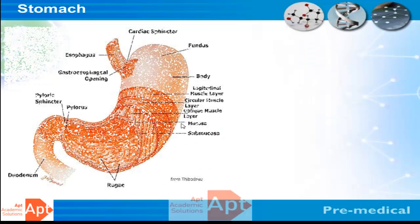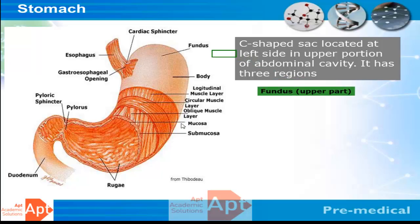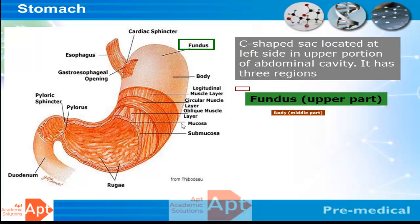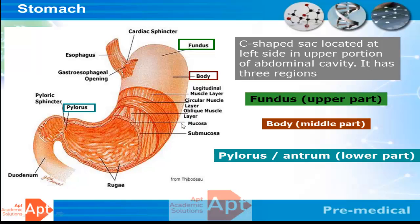This is the structure of a stomach, which can be divided into three parts: the upper part called the fundus, the middle part called the body, and the lower part called the pylorus or antrum. Food enters through the oesophagus, controlled by the esophageal sphincter. From the stomach, food passes to the duodenum, controlled by the pyloric sphincter.